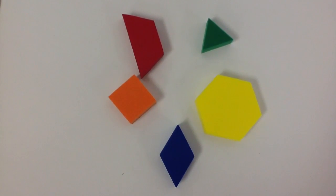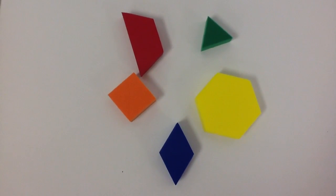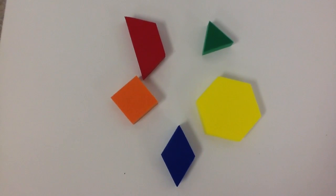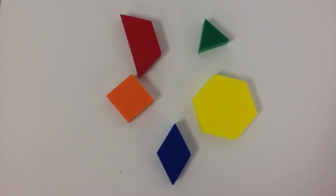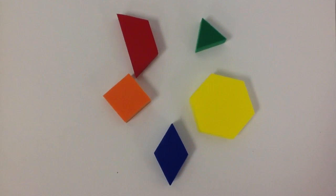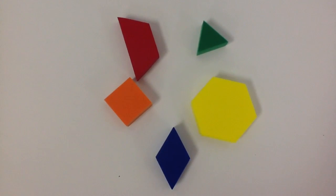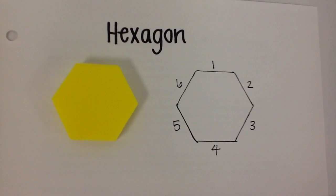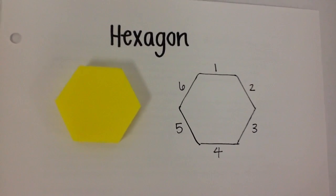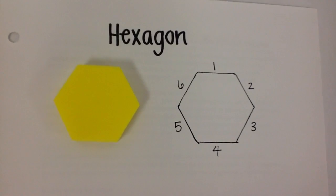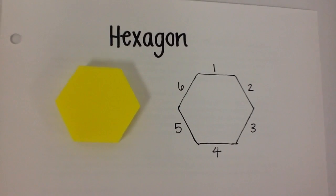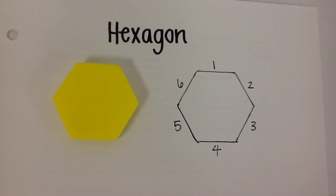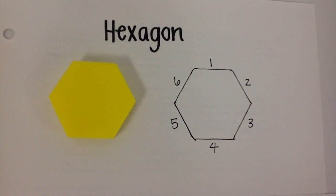We are going to teach you about the shapes that you will use for your pattern. The first shape is a hexagon. It has six equal sides. In the pattern blocks it is yellow. It is the biggest shape you will be working with.